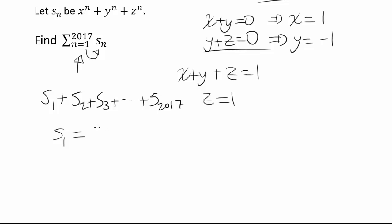What's S sub 1? S sub 1 is x to the first power plus y to the first power plus z to the first power. And x is 1, y is negative 1, z is 1. So this thing is equal to 1 minus 1 plus 1, which is 1.